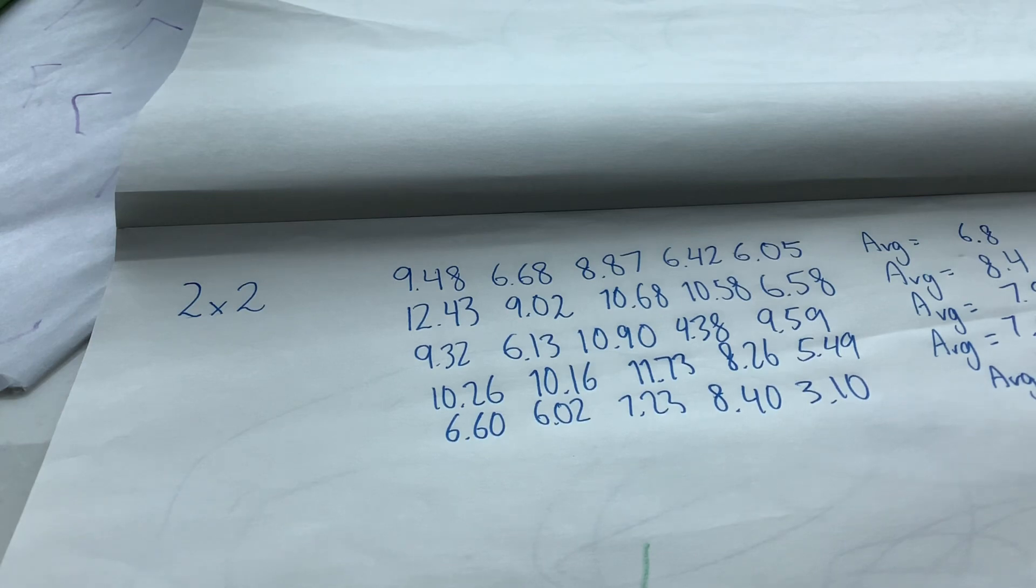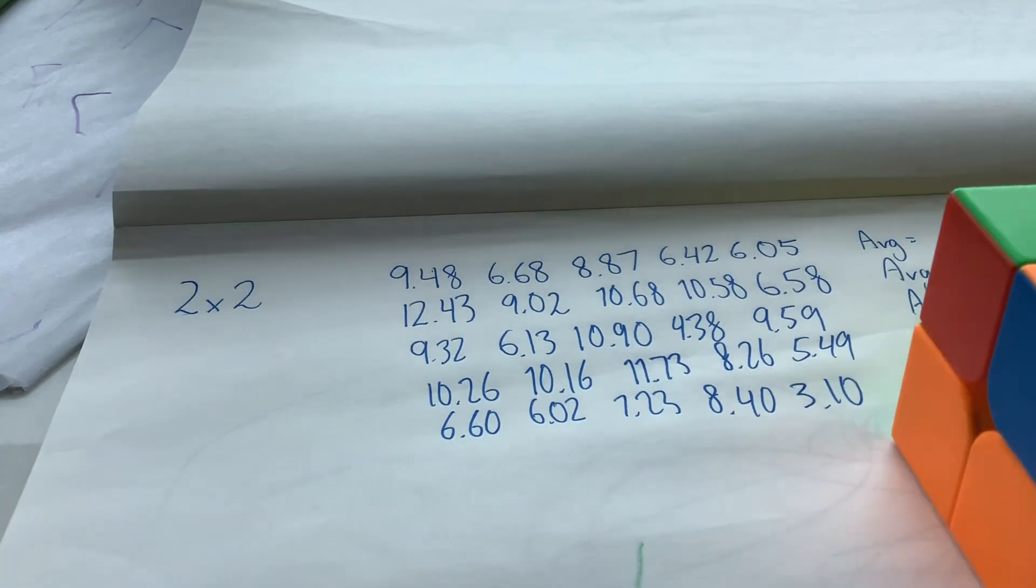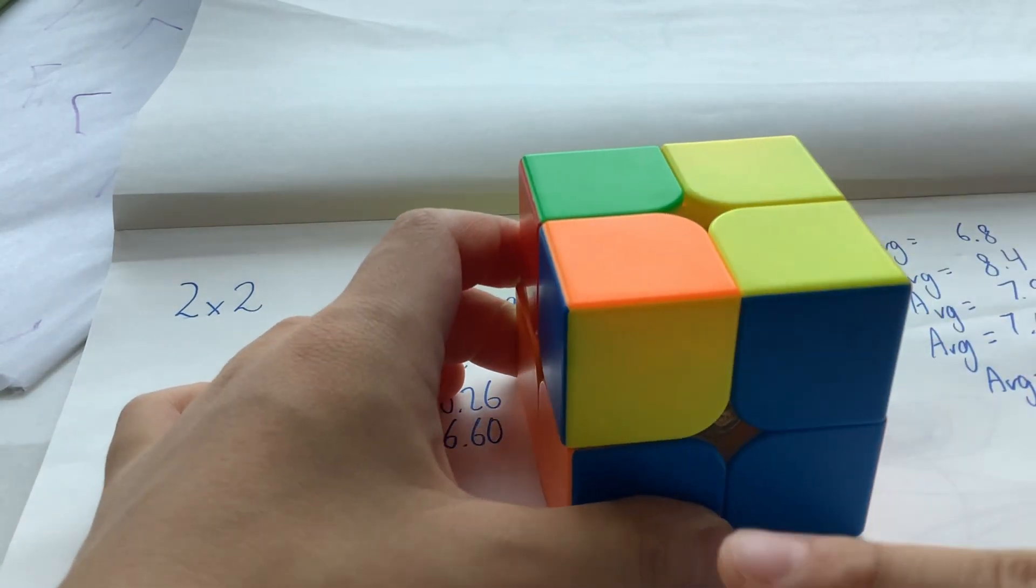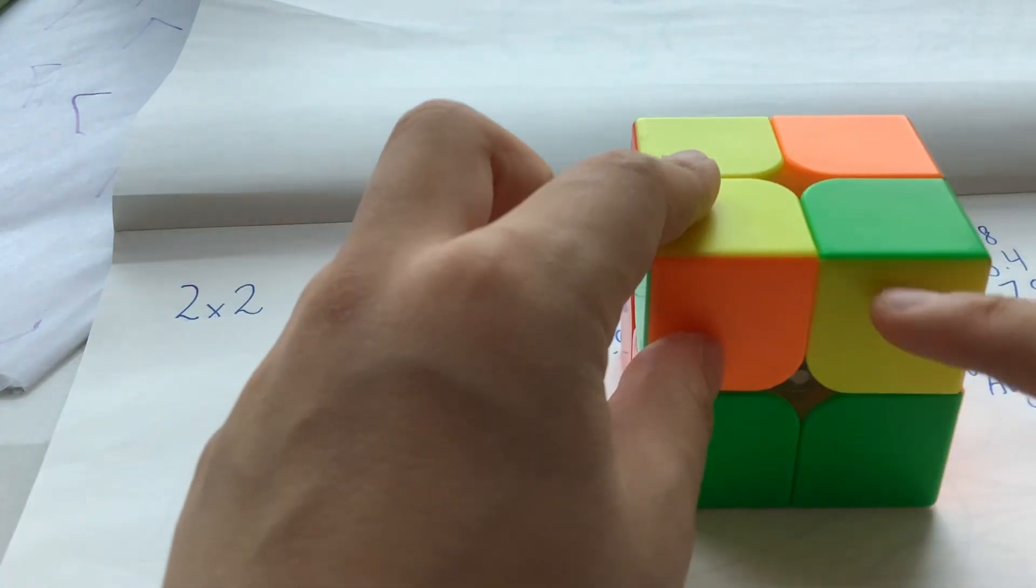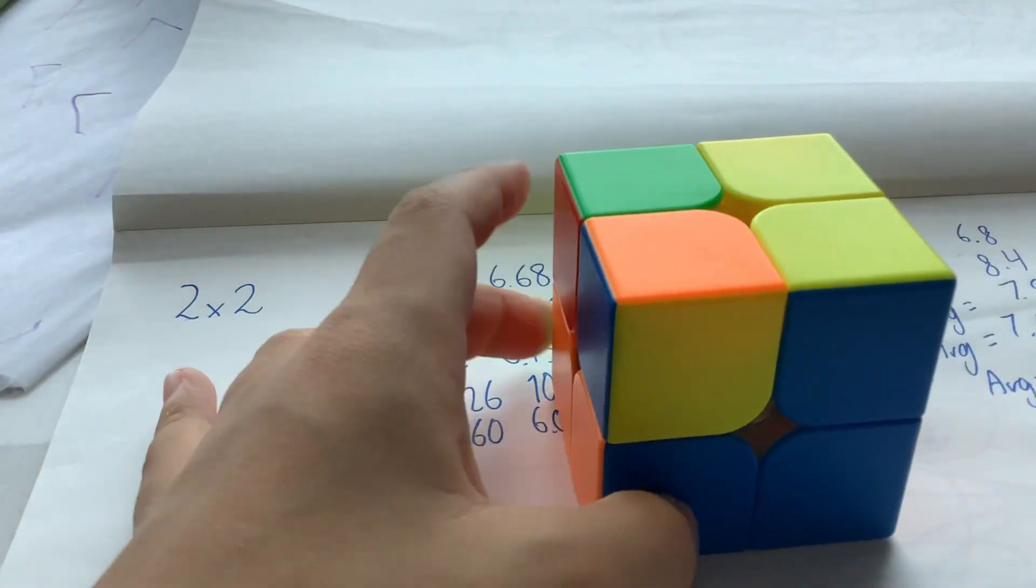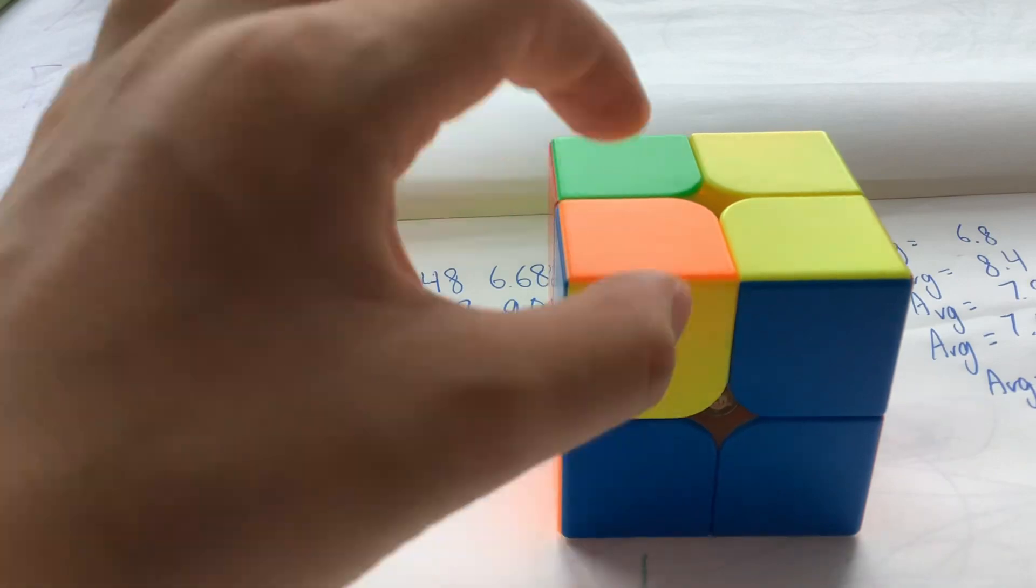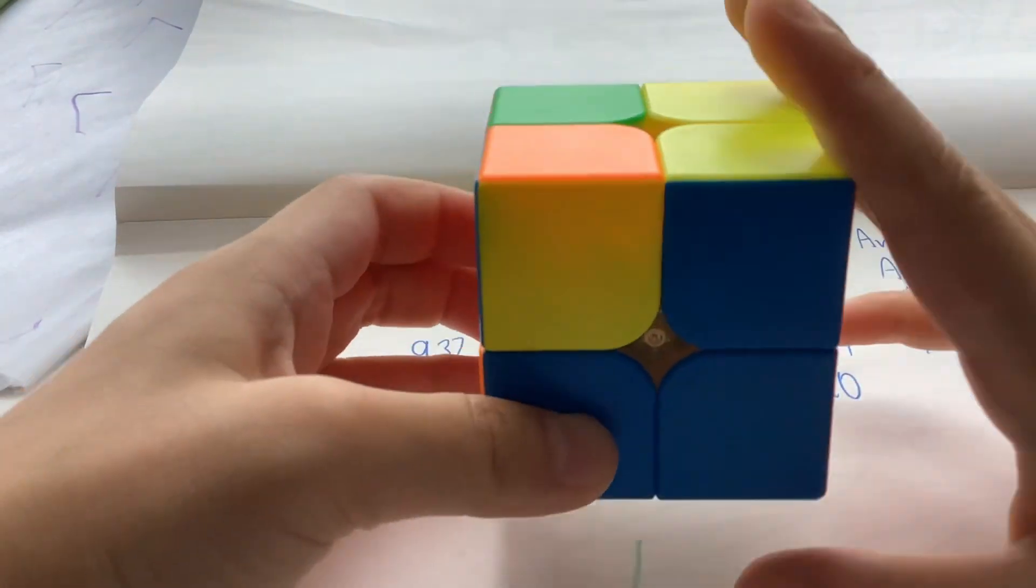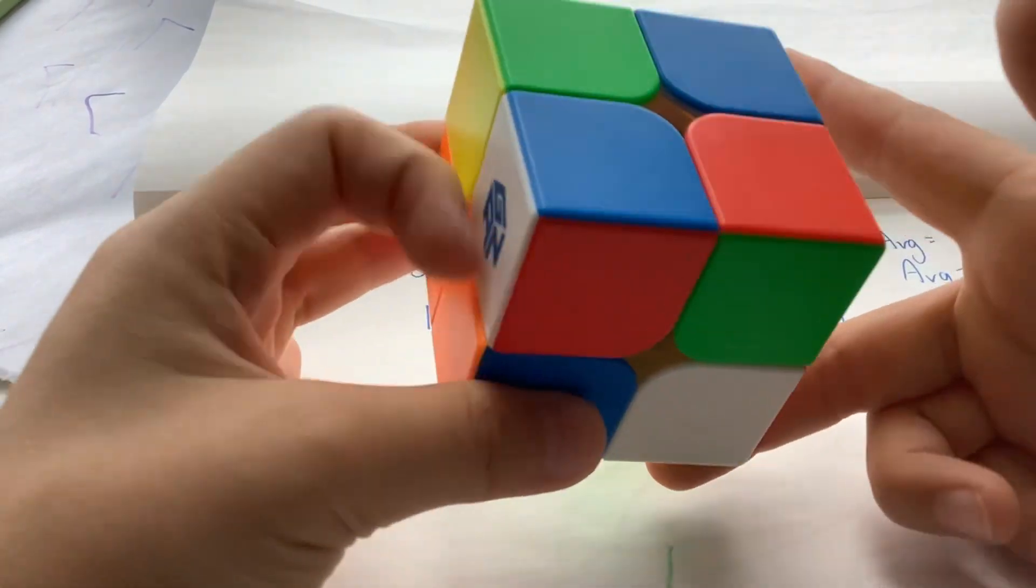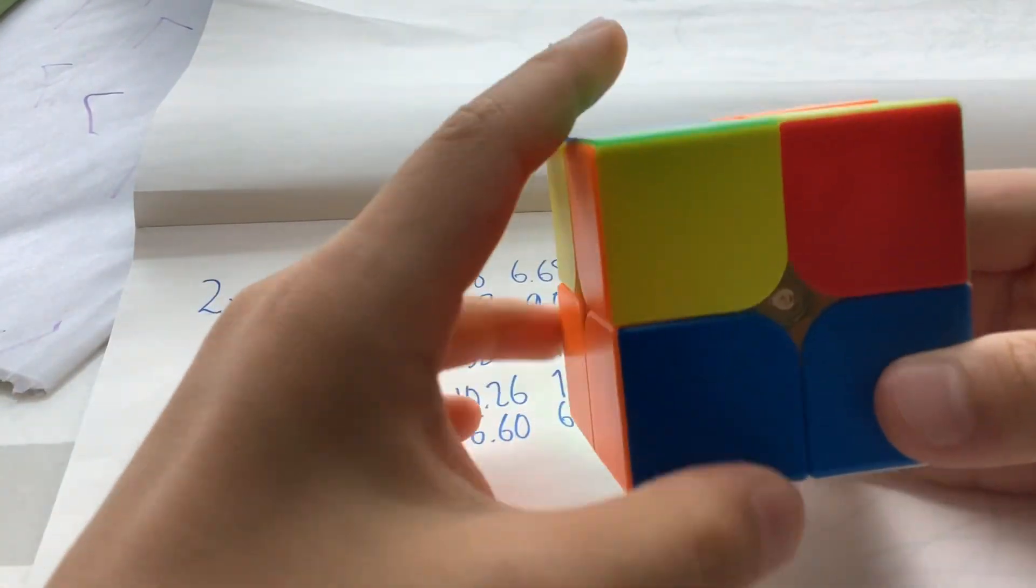Now if you have this one where there's two here and this is the opposite side, go here, face here where this facing you is on the left side. Then just do a Sune, which is this.